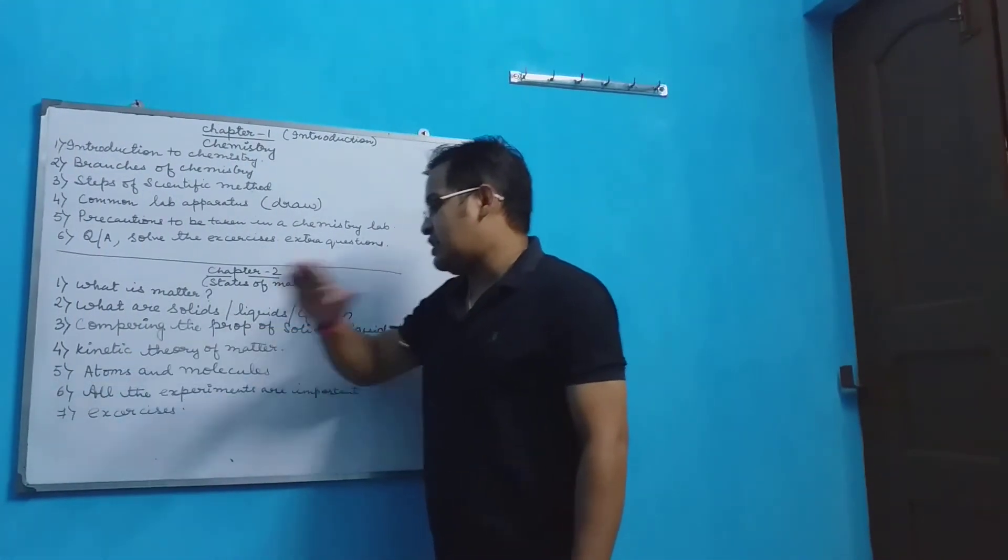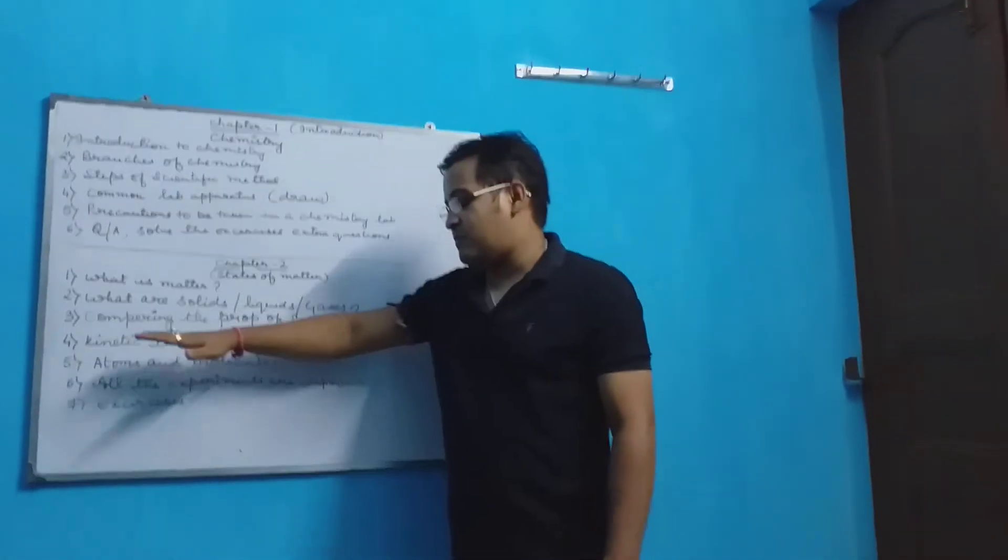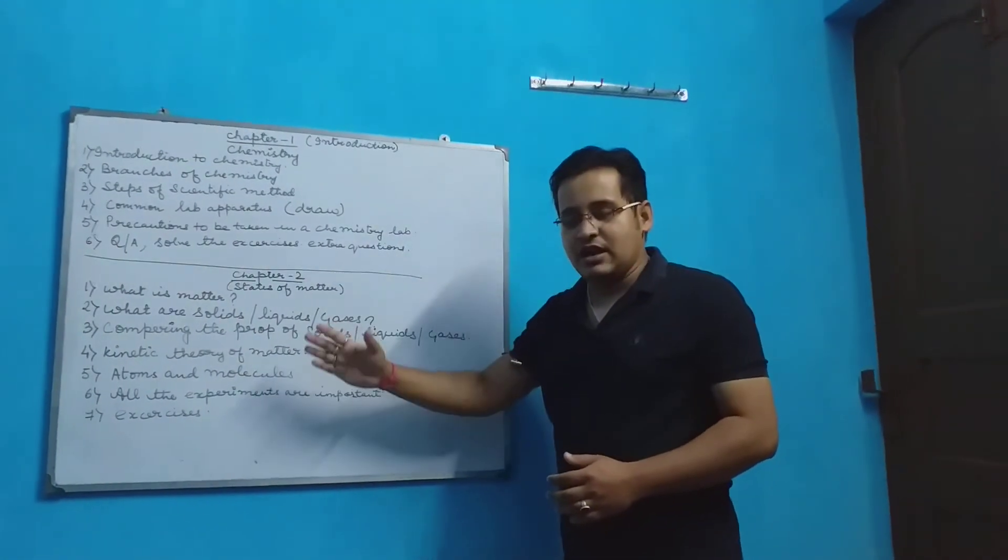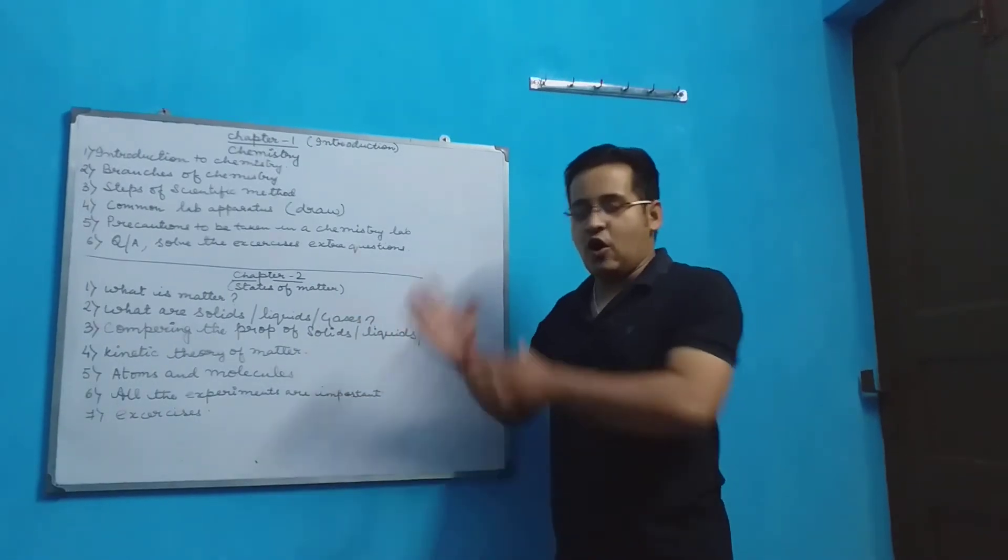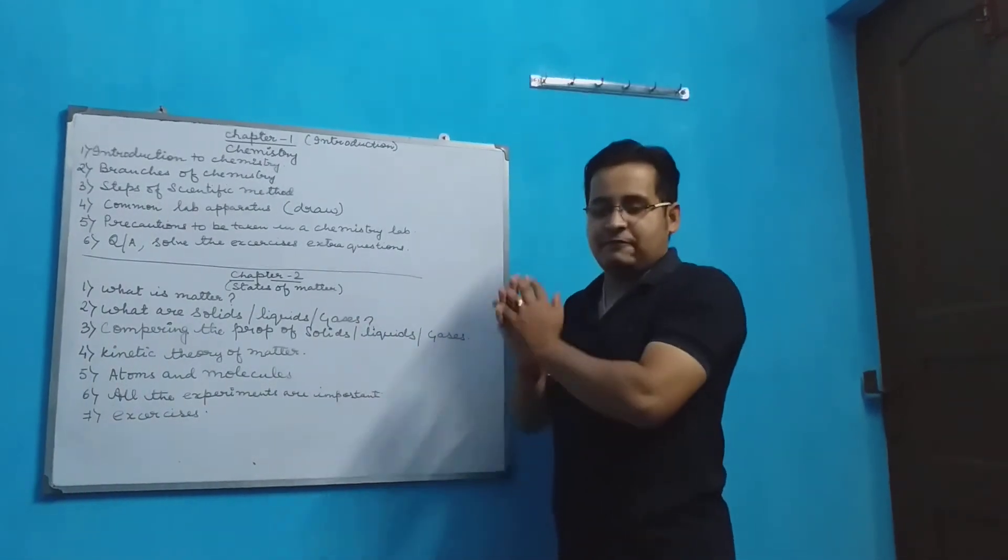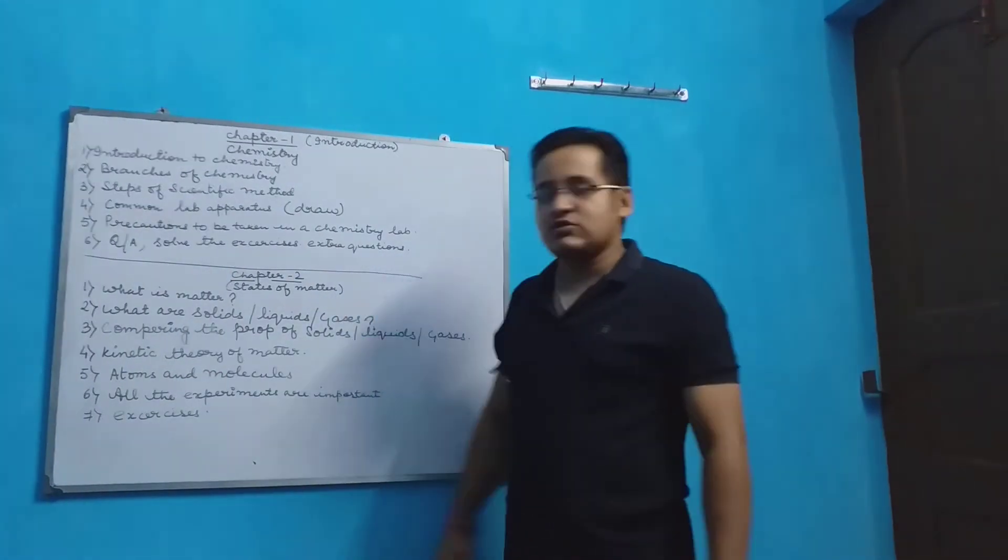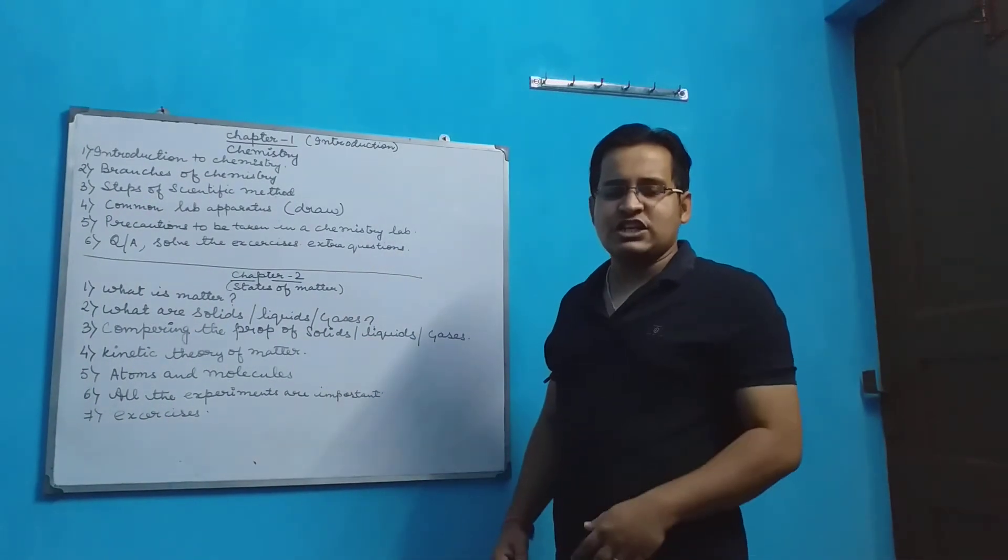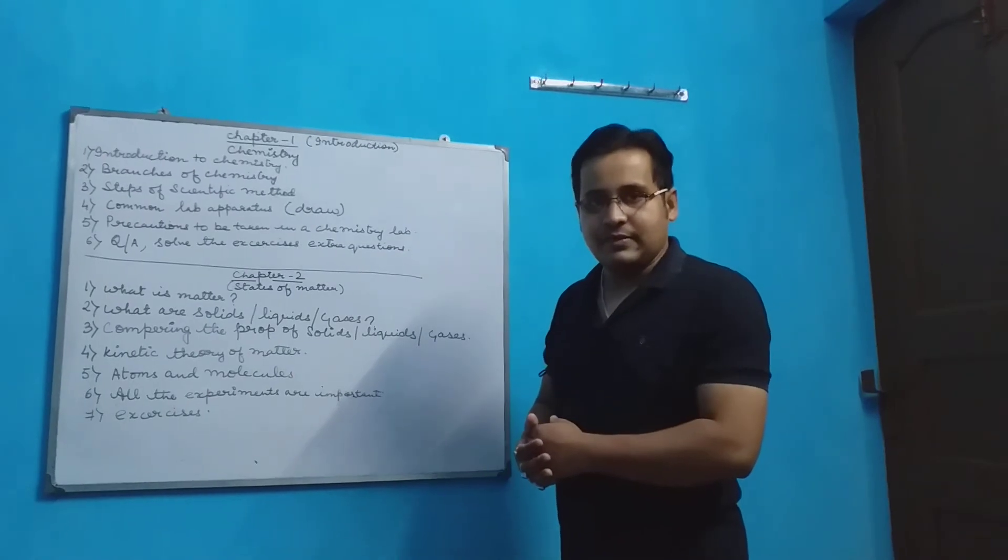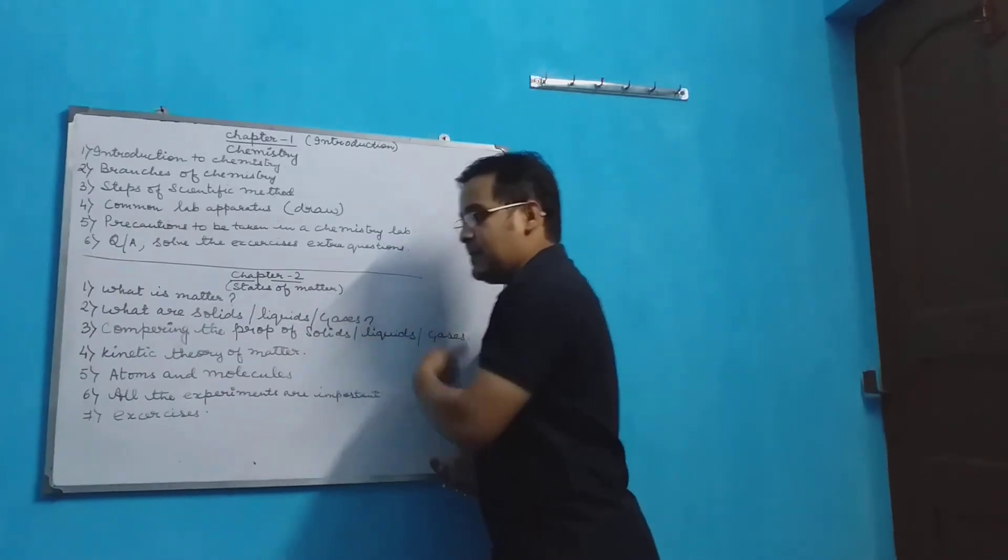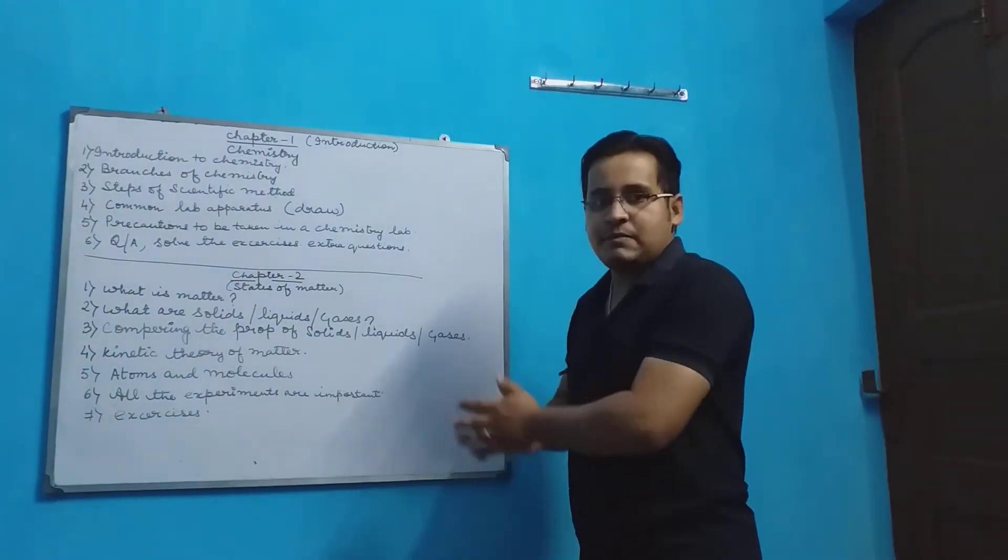Next is the kinetic theory of matter. This theory of matter is very very important for your exams. It has to be done very carefully. All the four points are very very important along with the diagram. Atoms and molecules. Atoms are the smallest particles of matter. Whereas molecules are the smallest particles of a substance which can exist independently. So their difference is very important.